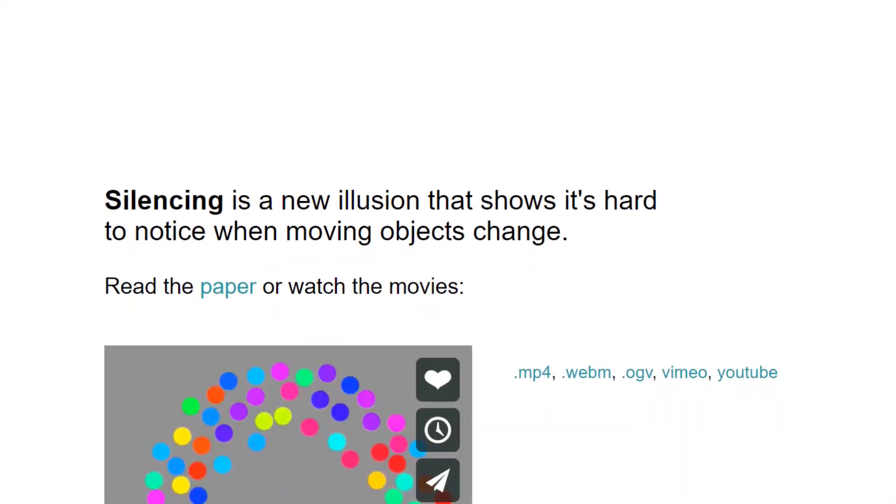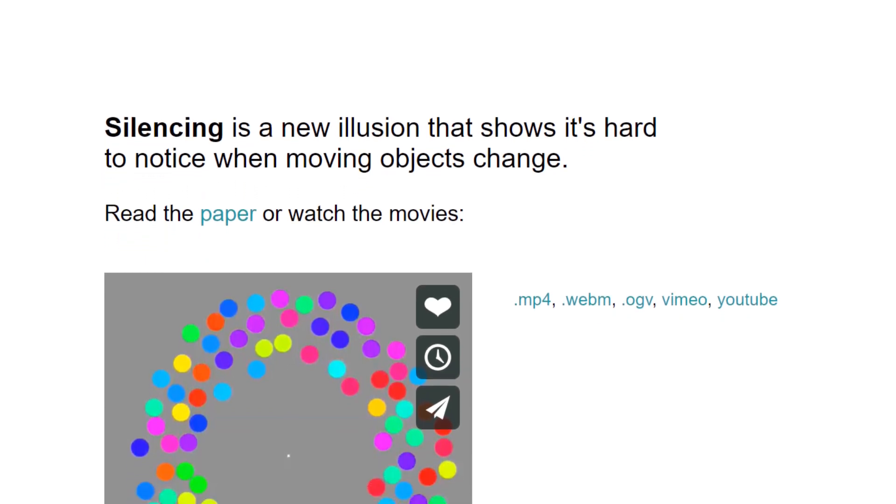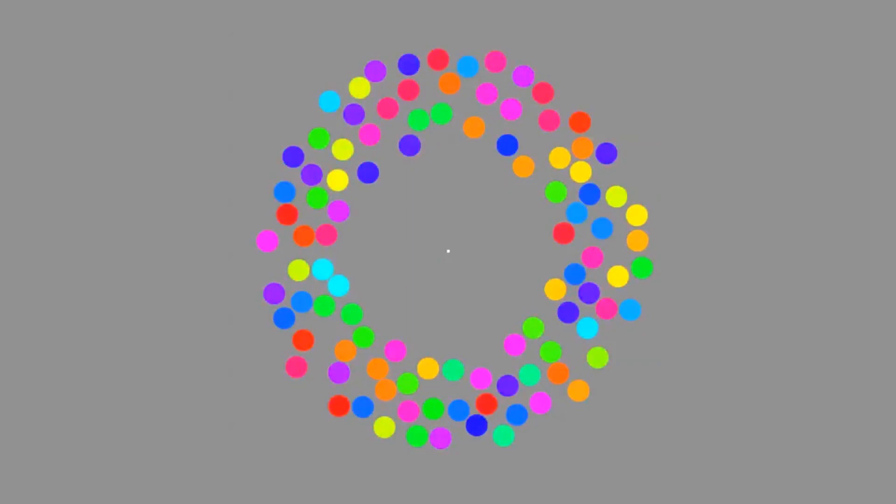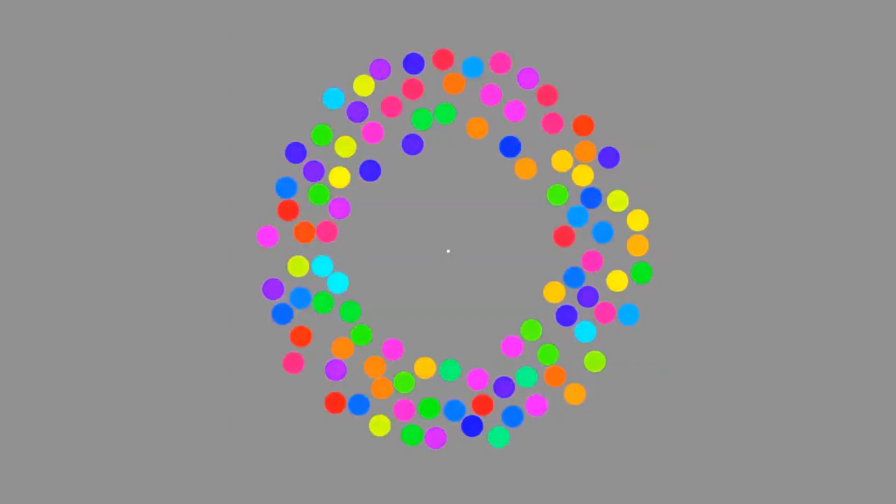Up next, we have the silencing illusion. When objects move, we start ignoring other types of changes. For example, now we see that the colors of the discs are constantly changing. Now look at the center of the circle. Once the discs start moving, we barely see any color change. Size and shape changes disappear as well.